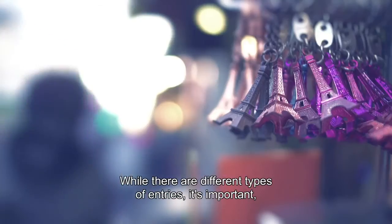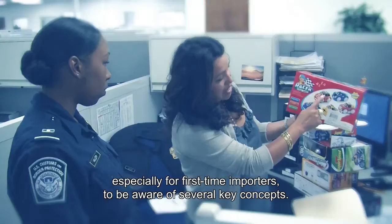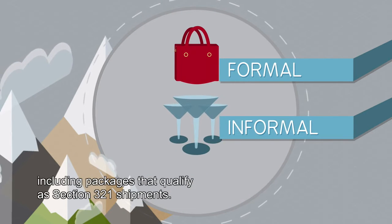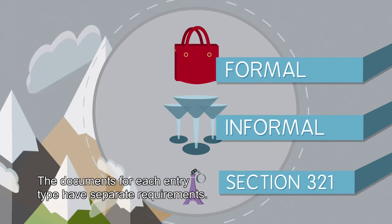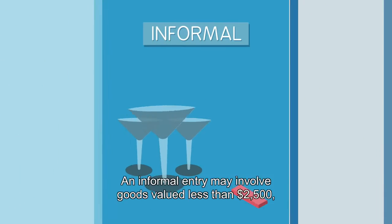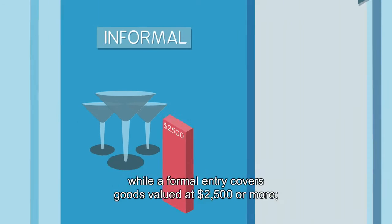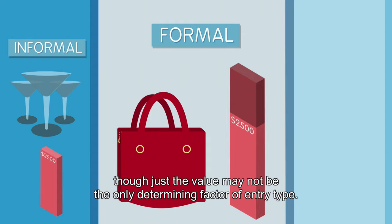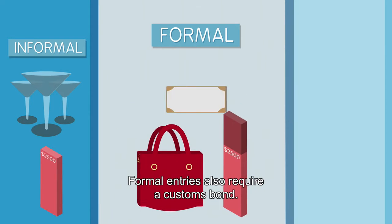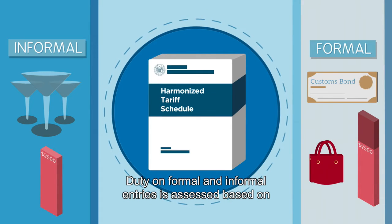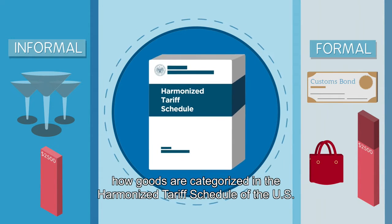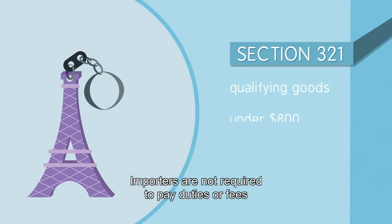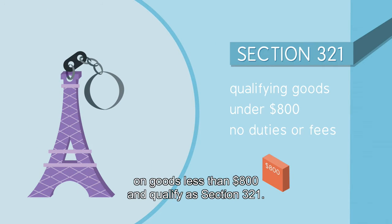While there are different types of entries, it's important, especially for first-time importers, to be aware of several key concepts. Types of entry include formal entries and informal entries, including packages that qualify as Section 321 shipments. An informal entry may involve goods valued less than $2,500, while a formal entry covers goods valued at $2,500 or more, though value may not be the only determining factor. Formal entries also require a customs bond. Duty on formal and informal entries is assessed based on how goods are categorized in the Harmonized Tariff Schedule of the U.S., and other processing fees may be assessed as applicable. Importers are not required to pay duties or fees on goods less than $800 that qualify as Section 321.